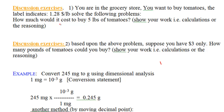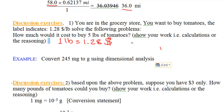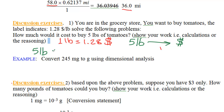Drawing the map: we are converting from 5 pounds to dollars. In step 3, multiply 5 pounds by the conversion factor that cancels out pounds — pounds goes in the denominator — to yield the answer in dollars, so dollars must be in the numerator.